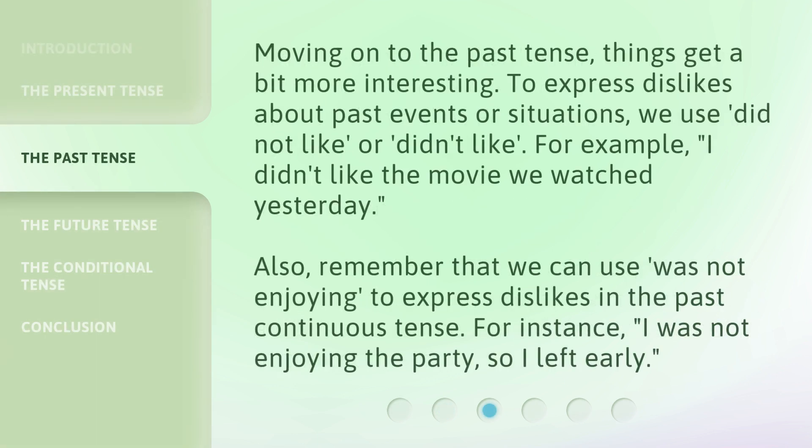Moving on to the past tense, things get a bit more interesting. To express dislikes about past events or situations, we use 'did not like' or 'didn't like'. For example, 'I didn't like the movie we watched yesterday.' Also, remember that we can use 'was not enjoying' to express dislikes in the past continuous tense. For instance, 'I was not enjoying the party, so I left early.'